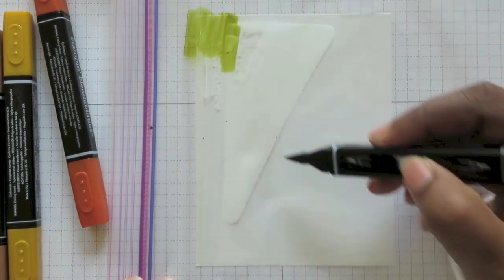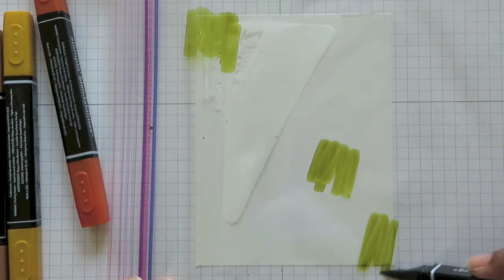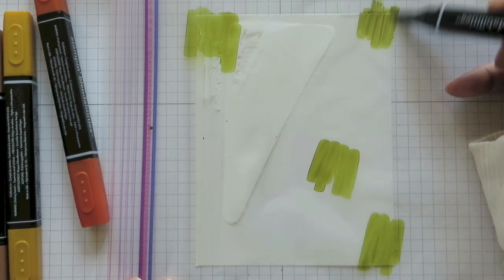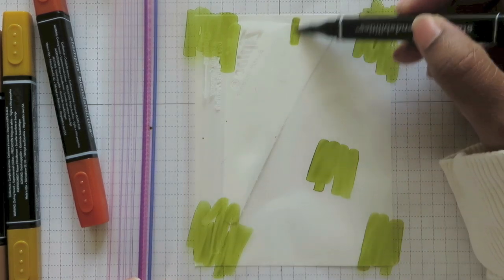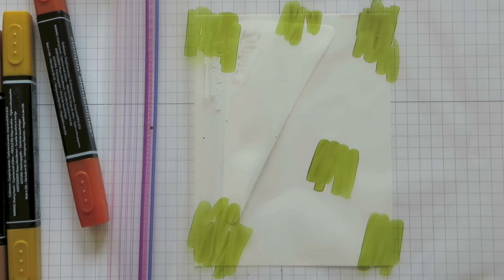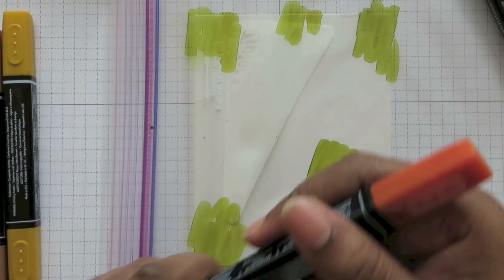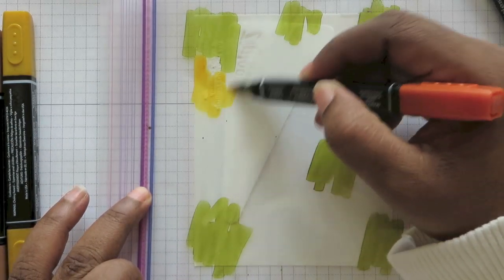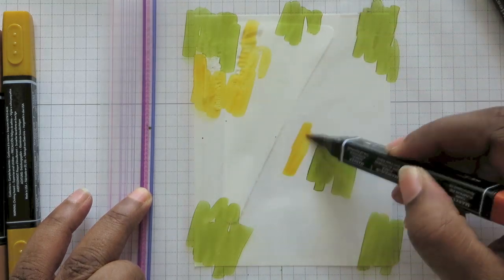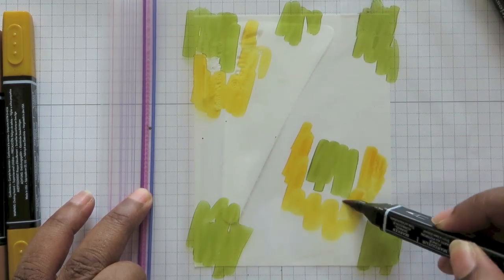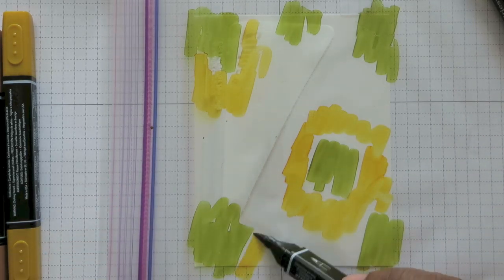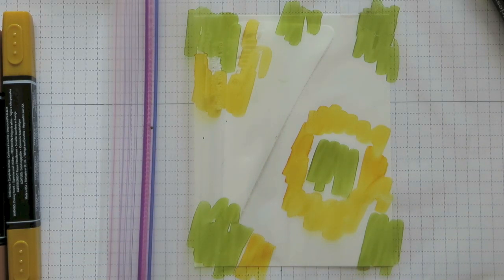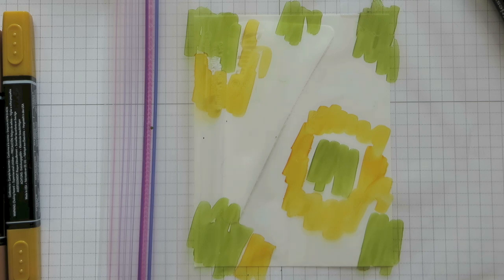You can scribble anywhere on your Ziploc. Again, the glossy cardstock that I have on here right now is under the Ziploc and I'm scribbling on top of the Ziploc. And I'm scribbling randomly different colors. And I've chosen my color palette in advance.